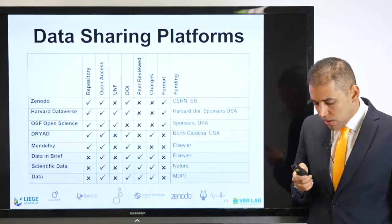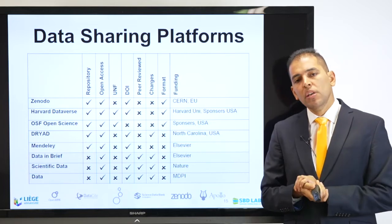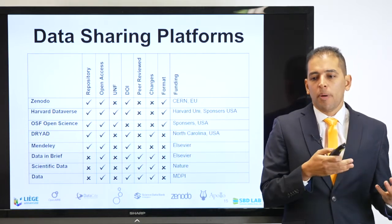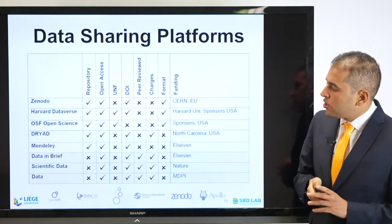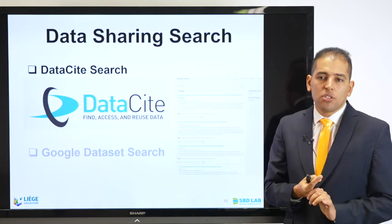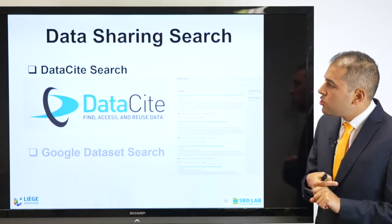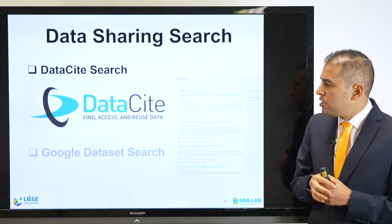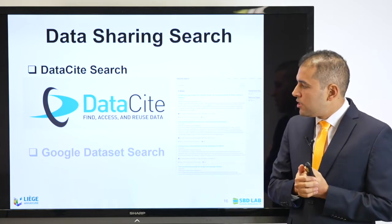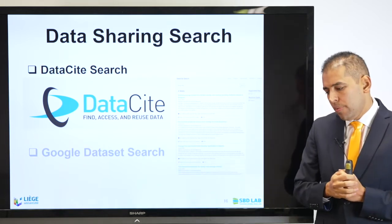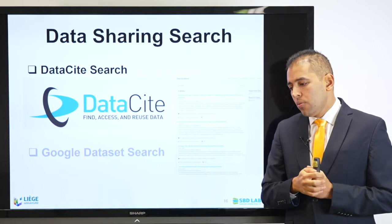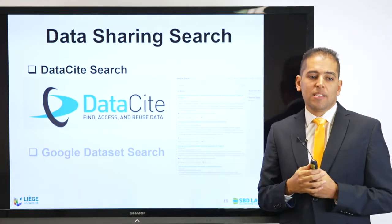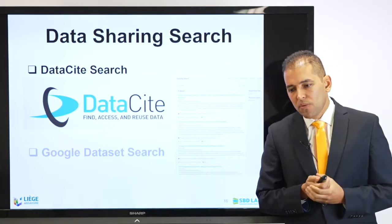Explore this table and check which is the most suitable data platform for you — whether you want to publish your dataset in a journal as a data paper or publish it as a dataset in a platform. For searching datasets, the most powerful search engine in my opinion is the Datasette search. I consider Google Dataset Search a weak engine as it does not cover most datasets. I always advise you to start with Datasette search to explore available datasets if you want to do a meta-analysis or reproducibility study.